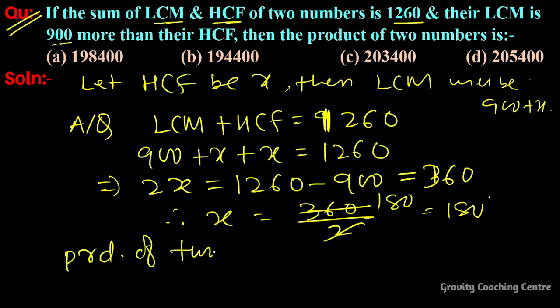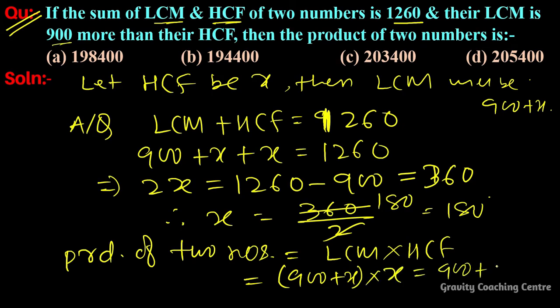And we know that product of two numbers equal to LCM into HCF. So equal to 900 plus x into x, so equal to 900 plus 180 into 180, so equal to 1080 into 180, so equal to 194400 answer.